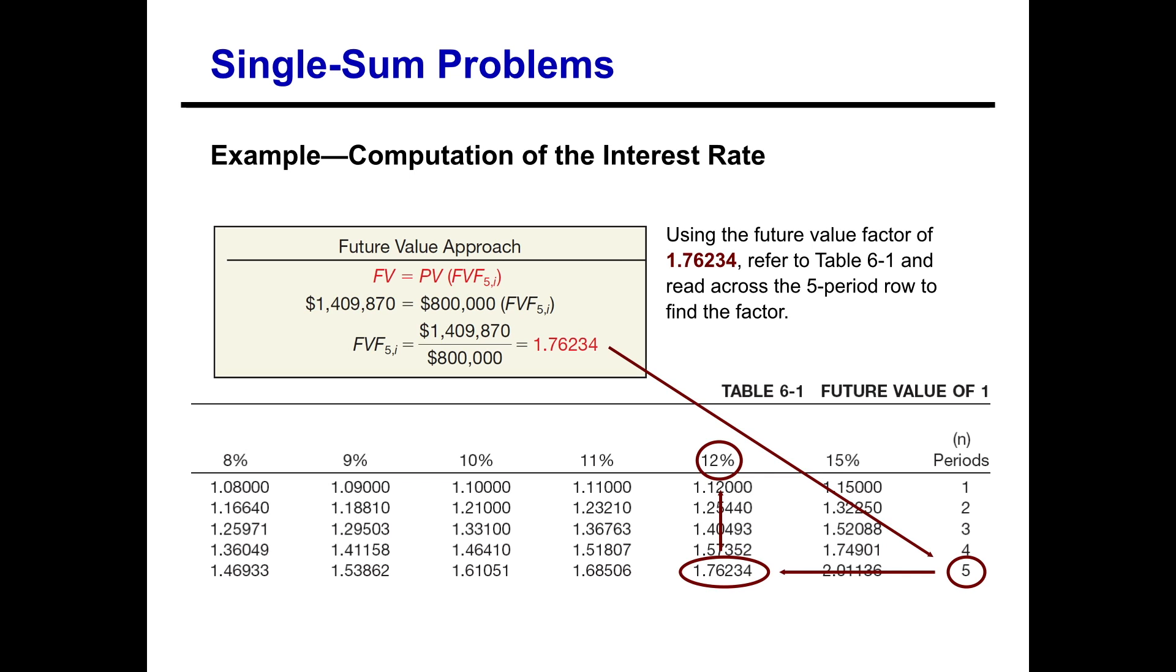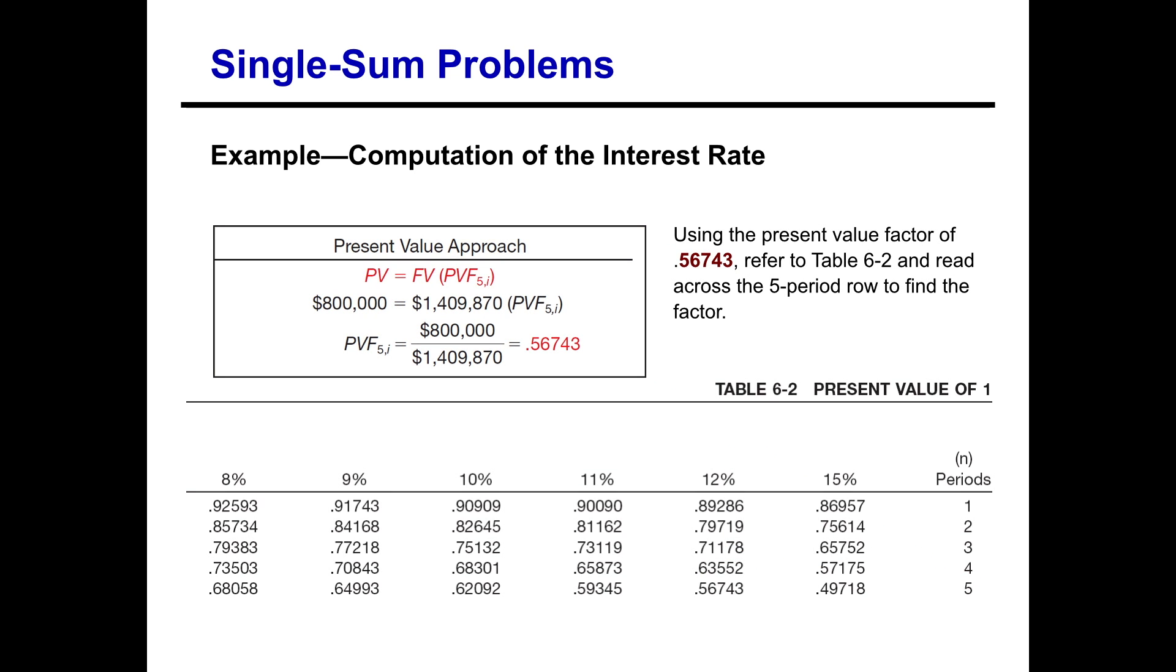Remember we can also use the present value approach to solve for that 12% and it should come out to be the same answer. It should not change our answer. So let's take a look at it. So here we start with the present value now equal to the future value times the present value factor. And if we do that, we find that $800,000 equals 1,409,870x, our unknown, that present value factor. If we solve for that present value factor, we come up with 0.56743.